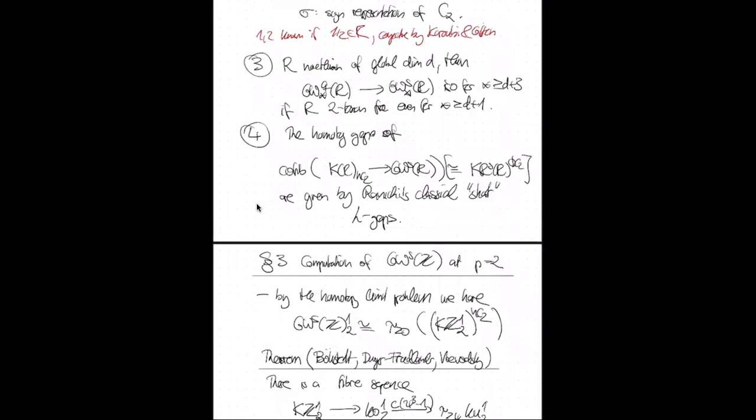Let me summarize: the computation of GW(ℤ) is an immediate consequence of identifying the cofiber of the hyperbolic map with the classical L-groups of ℤ, which can be completely calculated. Thank you very much.